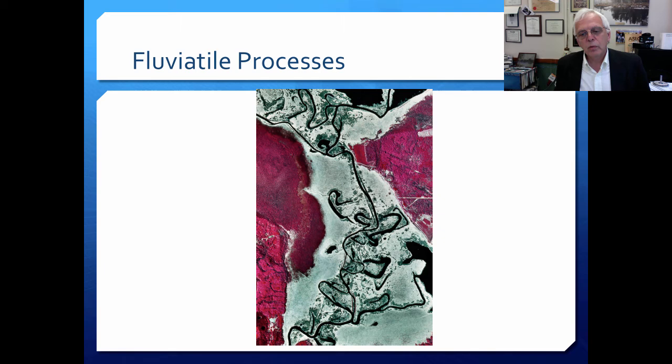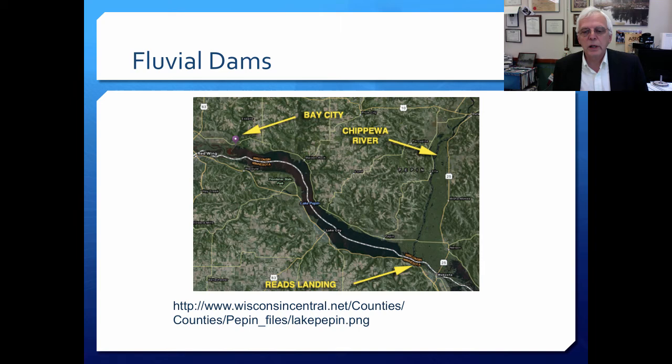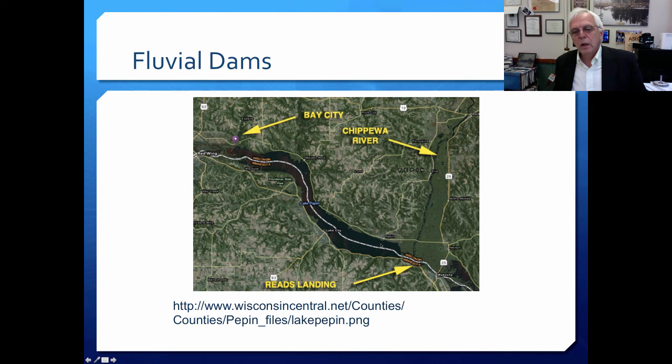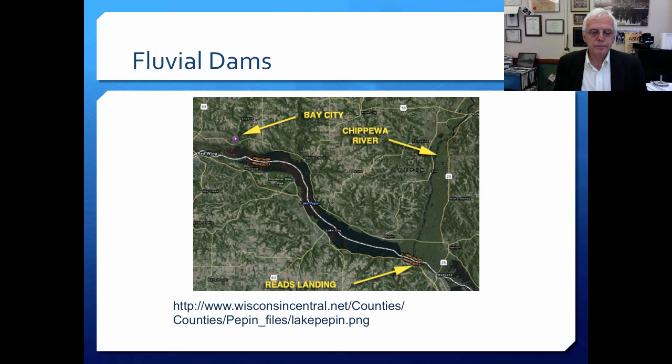Here's another river process that forms lakes. Sometimes rivers bring in enough sediment into other rivers to form a fluvial dam. This is Lake Pepin in Minnesota on the border between Wisconsin and Minnesota — the Chippewa River brings in sediment, builds up a large dam, and backs up Lake Pepin, a fairly substantial recreational system within the Mississippi River system.